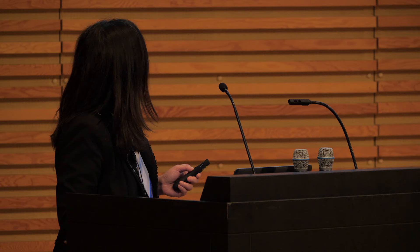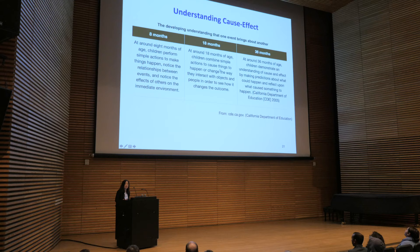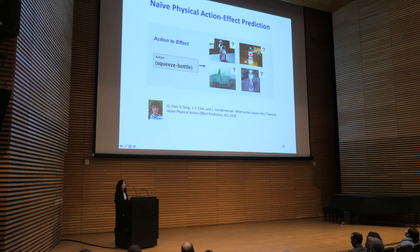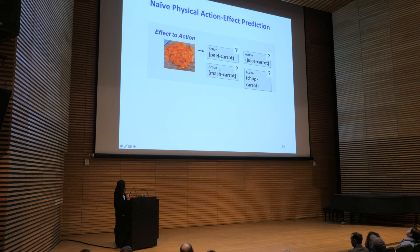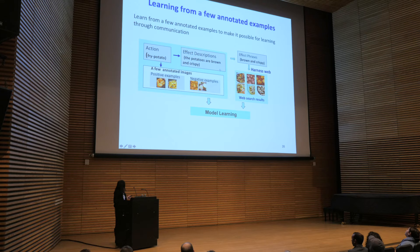In fact, this kind of cause-effect understanding is something humans develop at a very young age — an eight-month-old can shake a rattle to hear its sound. For robots to eventually work with humans as partners, they'll need the same kind of cause-effect understanding. My student Charles recently looked at naïve physical action-effect prediction: given a verb-noun pair like 'squeeze bottle' and a set of images describing different states, the goal is to identify states that describe the effect of this action. Similarly, given a state, the goal is to identify verb-noun pairs that could cause it. Our goal is to learn from a small number of examples rather than large data, making it possible for humans to teach robots during communication when situations arise.